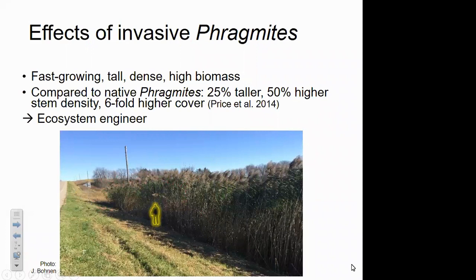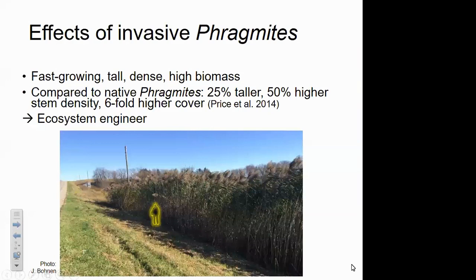Why do we care about invasive Phragmites? Despite being the same species as our native Phragmites, it's a different subspecies and quite different ecologically. It's notably faster-growing, taller, denser, and produces more biomass. Research in the Chicago area comparing non-native and native Phragmites in similar habitats found that the non-native was on average 25% taller, had 50% higher stem density, and six-fold higher cover. A photo from Minnesota shows a really robust invasive stand — a plant that grows that tall can truly act as an ecosystem engineer and alter its habitat.